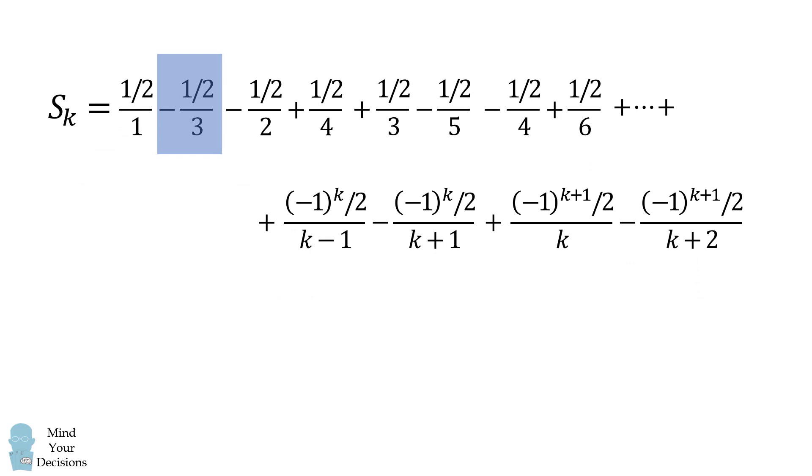Notice that this negative 1 half over 3 and this plus 1 half over 3 will cancel out. Then, if we advance by two terms, we will see that 1 half over 4 and negative 1 half over 4 will cancel out. Again, if we advance by two terms, these two terms will cancel out. And this will actually happen as we advance two terms in all of these terms in the middle part of the series. These terms will also cancel out. We only have the top two terms with denominators of k plus 1 and k plus 2 which will survive.